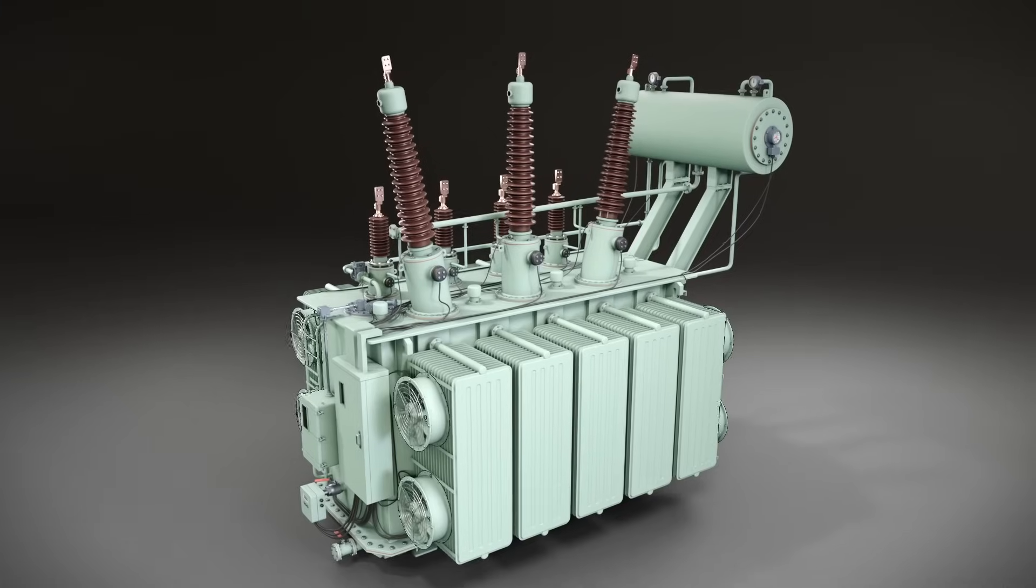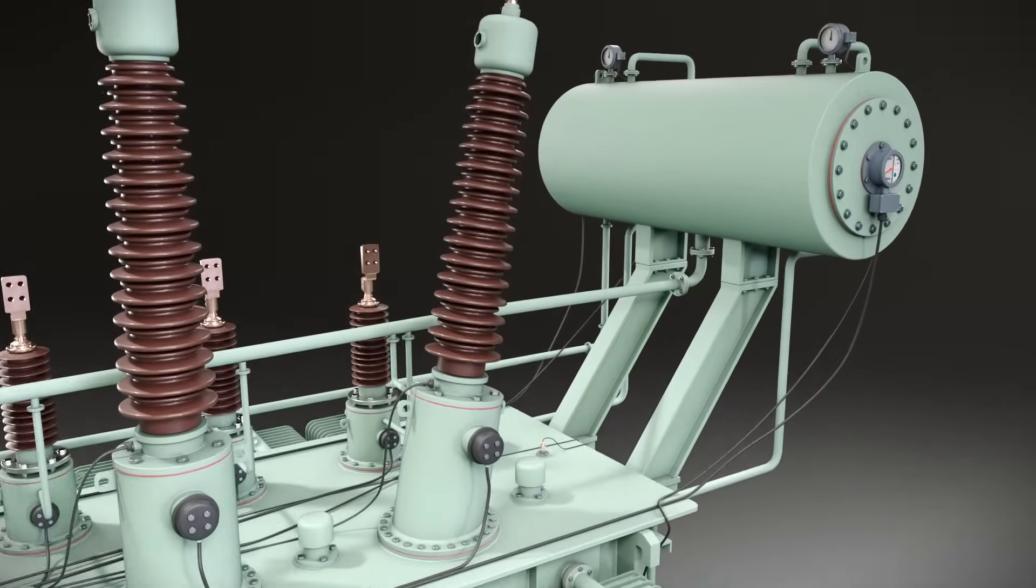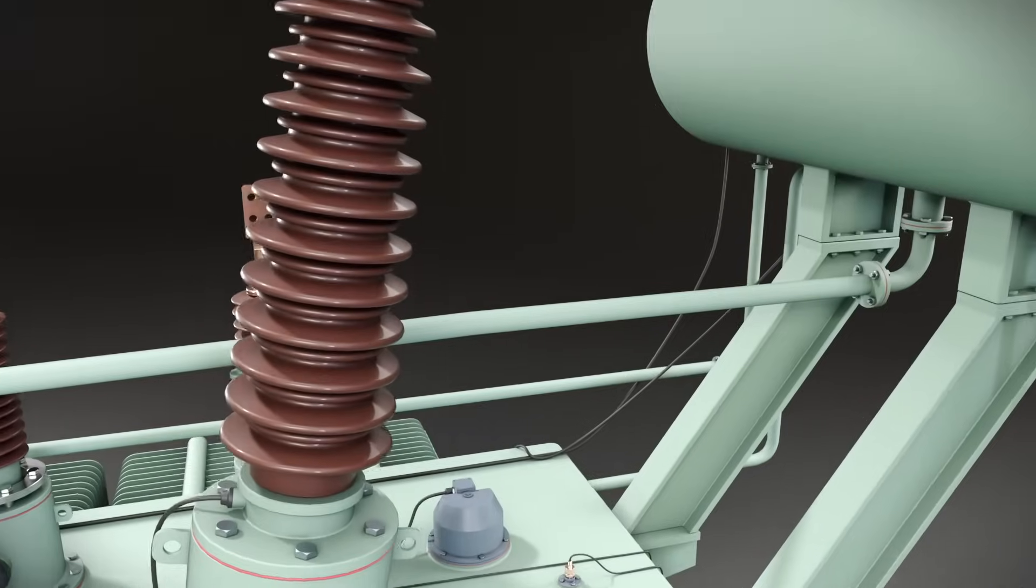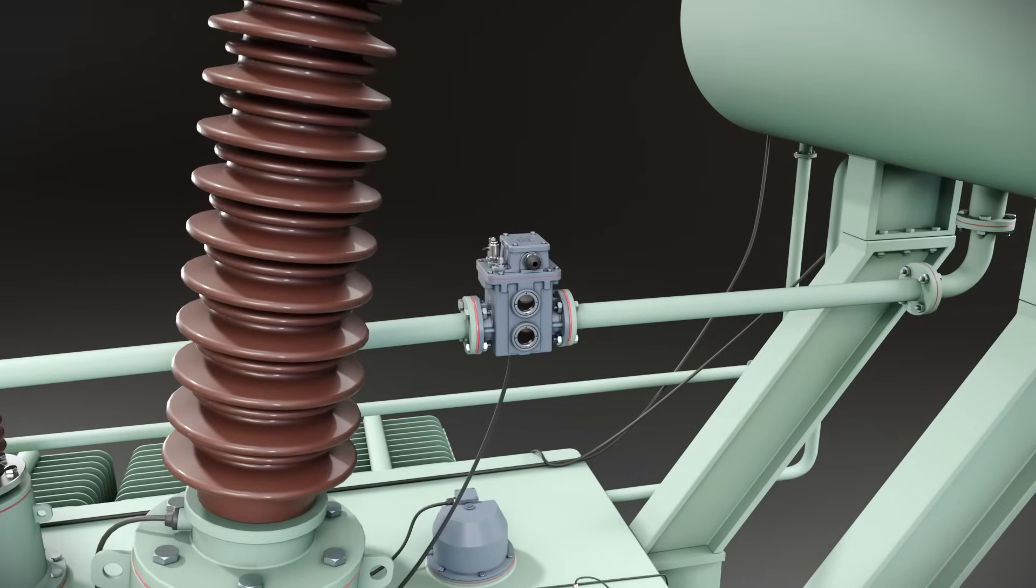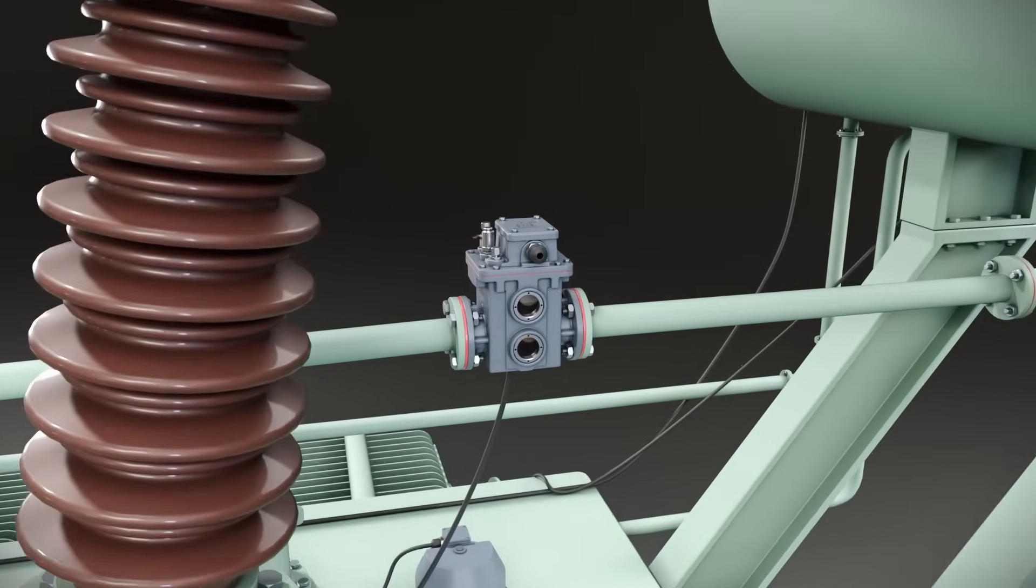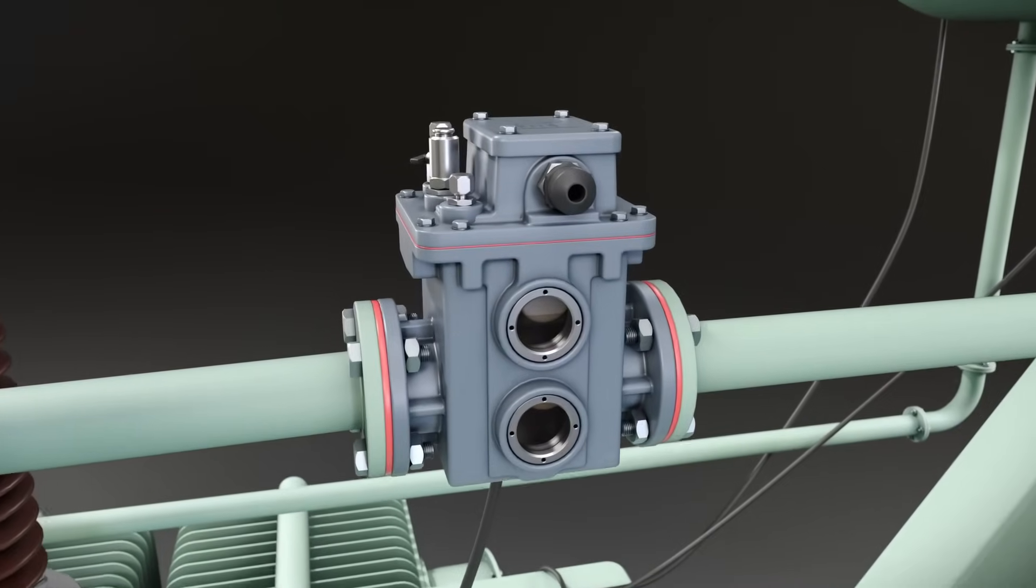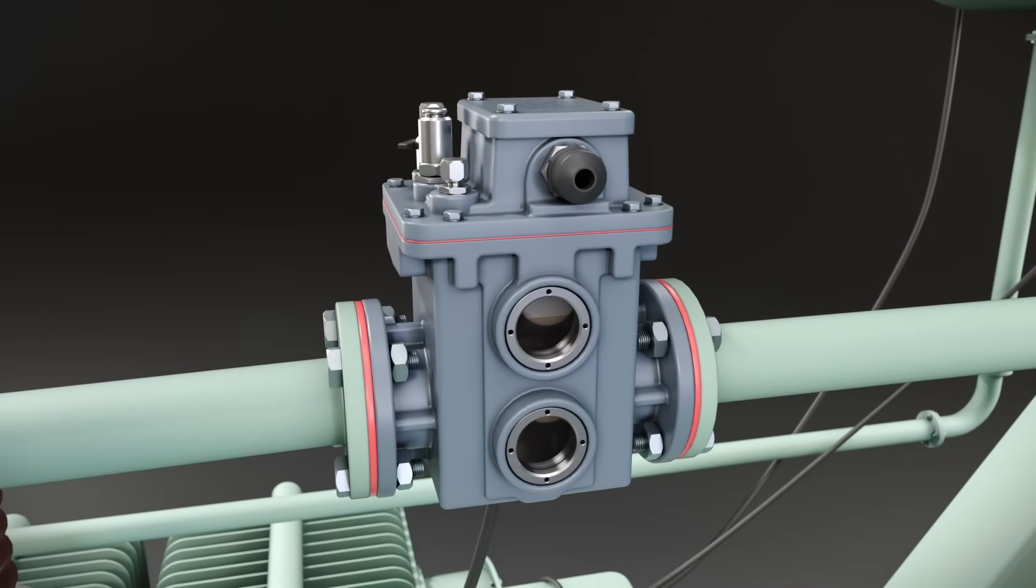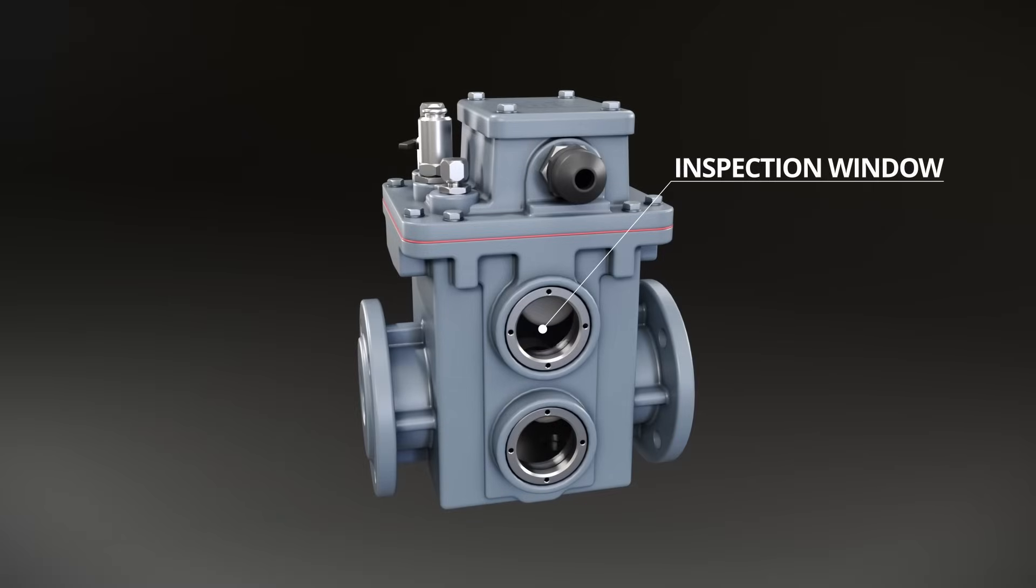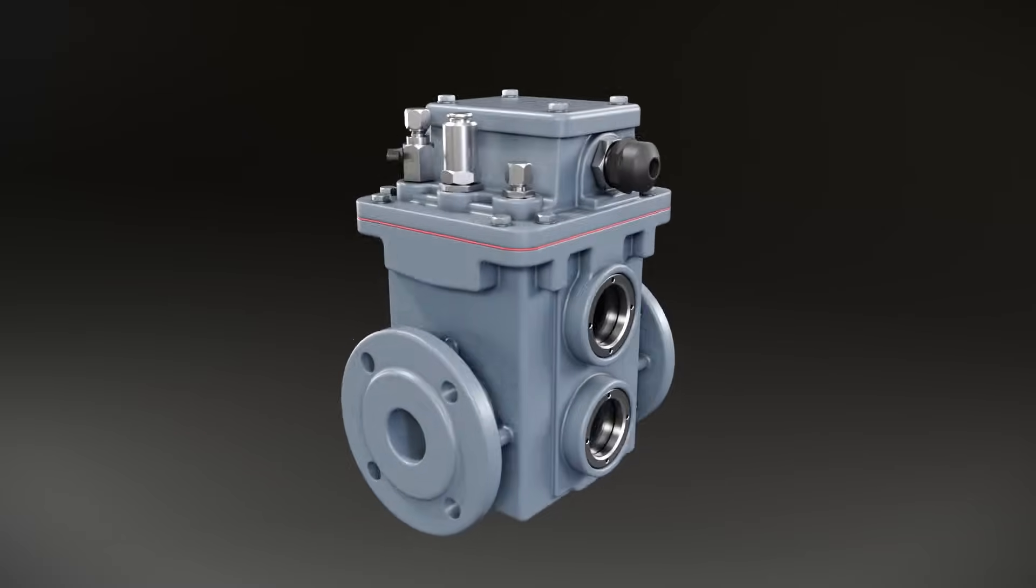A Buchholz relay is used exclusively for oil-filled transformers and is connected between the main tank and the conservator at a slightly elevated angle of around 2 to 5 degrees. The body of the relay is made of aluminum alloy, and two flanges on the body allow easy connection of the relay to the tubes. Two large inspection windows are fitted on both sides of the relay housing for convenient inspection.